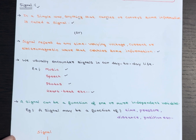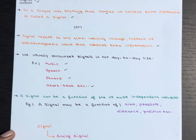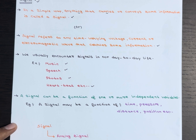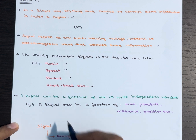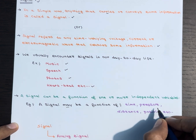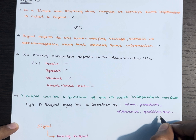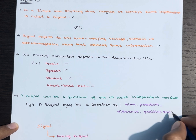Did you know that a signal can actually depend on one or even multiple independent variables? So a signal may be a function of time, pressure, distance, position, and so on.